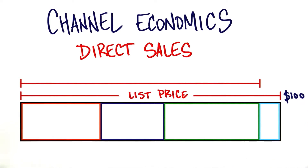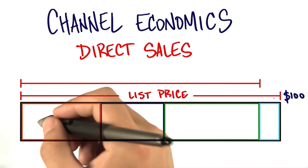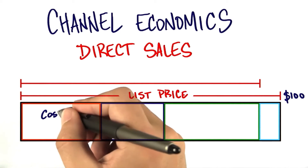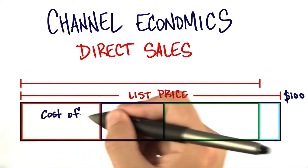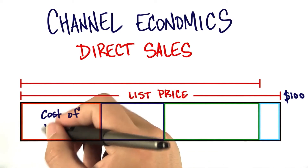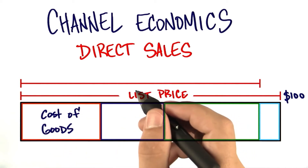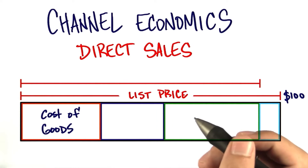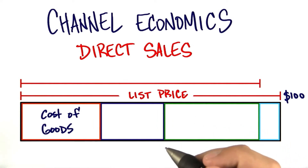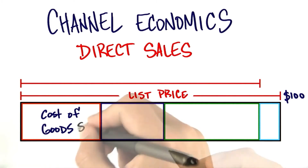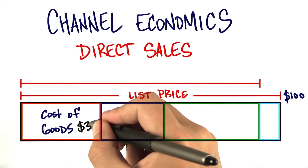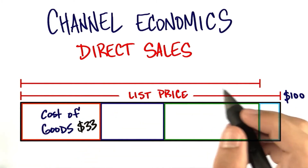One of the first questions in thinking about how to come up with this $100 list price is to understand how much did it actually cost me to manufacture a product. Now, in the web it might be the cost of my engineers, but in a physical product it might be the costed bill of materials coming out of my factory. Let's assume for the sake of discussion that that was $33 — $33 to build my product.